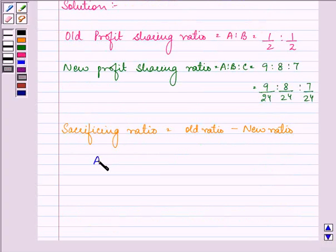Let us find out it for A first. It is 1/2 minus 9/24 which is further equal to 12 minus 9 that is 3 upon 24.